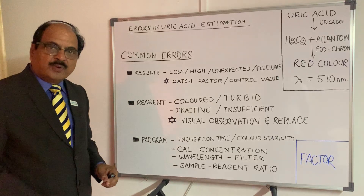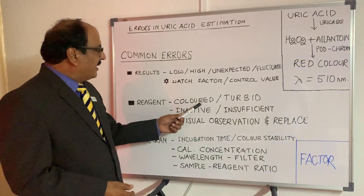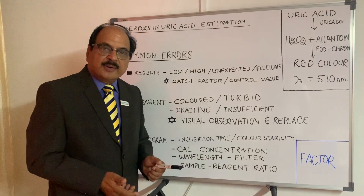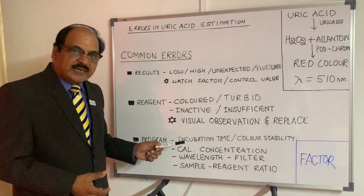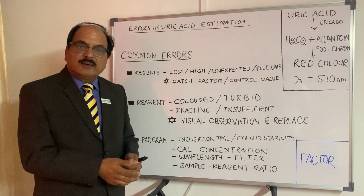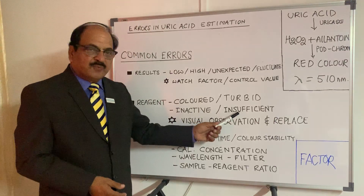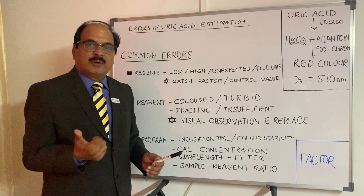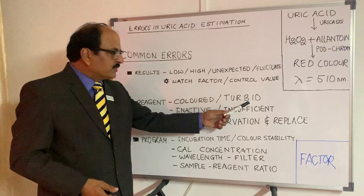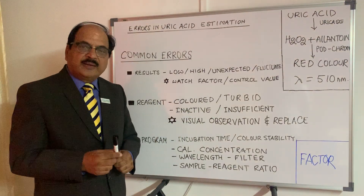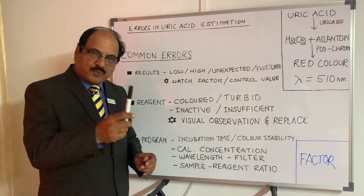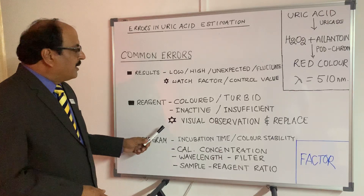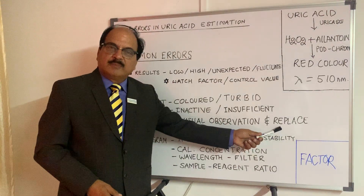Reagent-oriented errors that can happen: the reagent becomes colored when exposed to high temperature; it becomes turbid when contaminated; it becomes inactive — looking normal but giving no color; or the reagent is insufficient in volume and sucks in an air bubble when you draw 1ml. In all these cases, the most important thing is to take the reagent out in a clean test tube and watch it against the light. Observe for any color or tiny particles that will lead to errors. The best thing is to replace the reagent, because nothing else can be done.